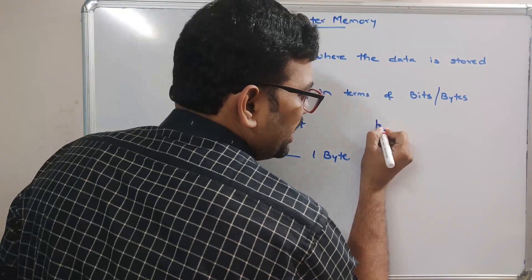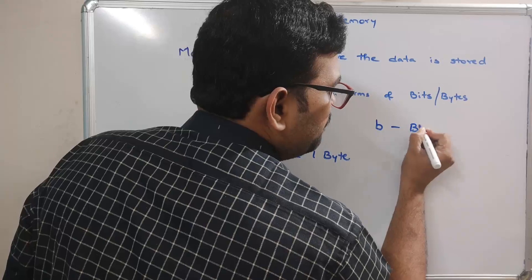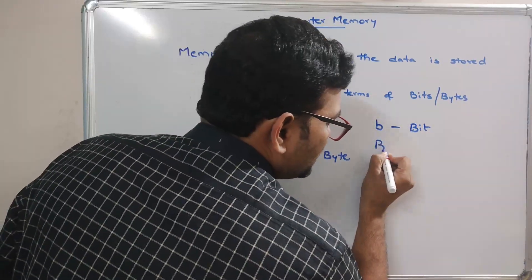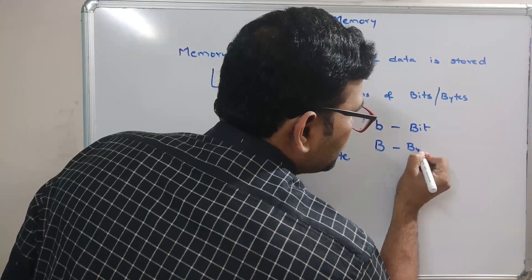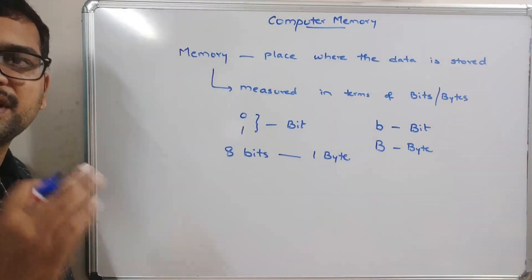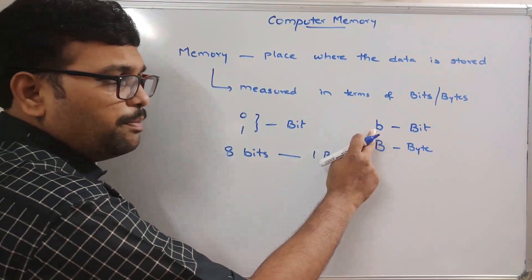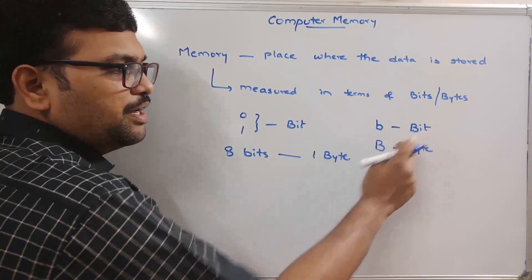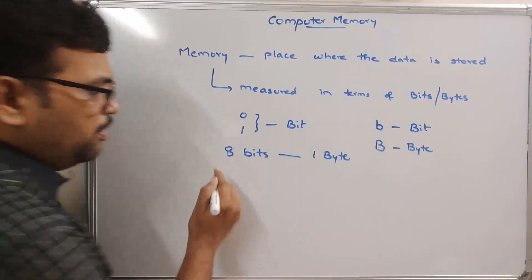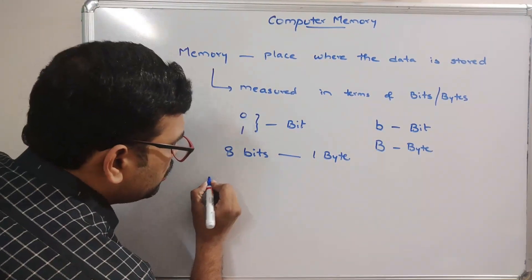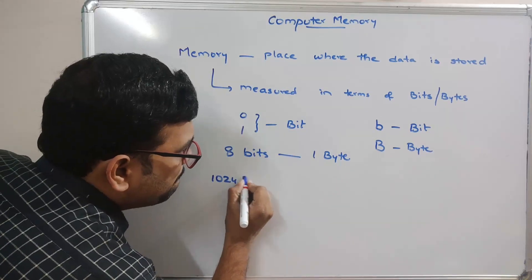In computer language, if it is represented as a small 'b' that means it is a bit; if it is represented as a capital 'B' that means it is a byte. That is the only difference in representation. Eight bits — a combination of zeros and ones — will give one byte.